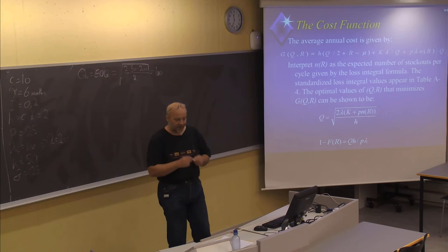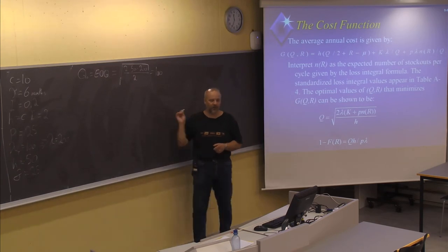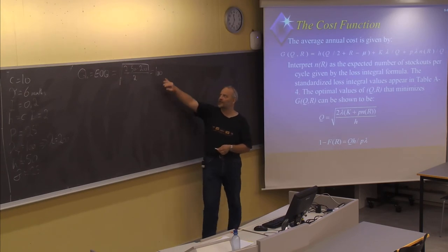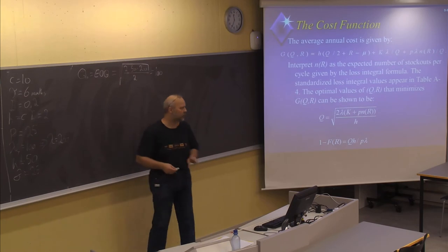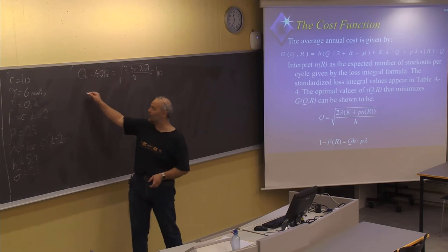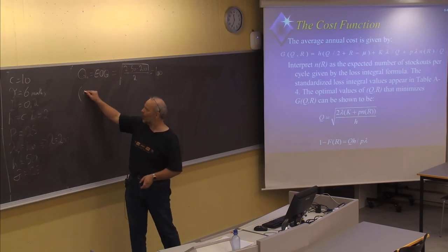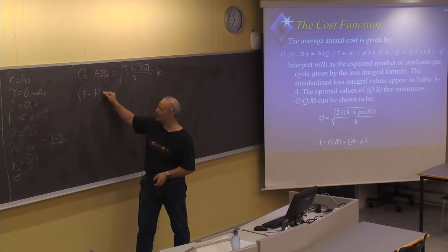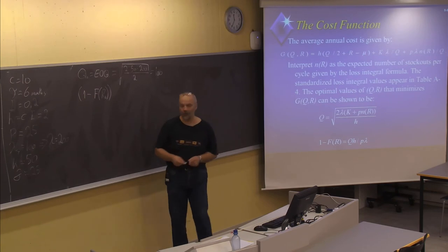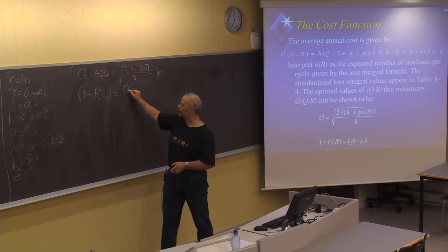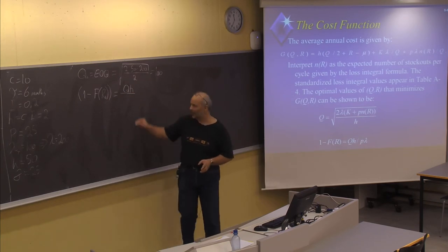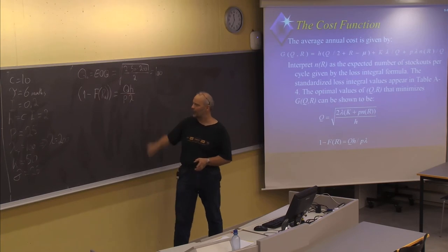Next, we try to find the corresponding reorder point R that fits best with Q = 100. Using the formula: 1 minus F(R₀) should equal Q × H divided by (P × λ). So 1 minus F(R₀) = 100 × 2 divided by (25 × 200), which equals 0.04.